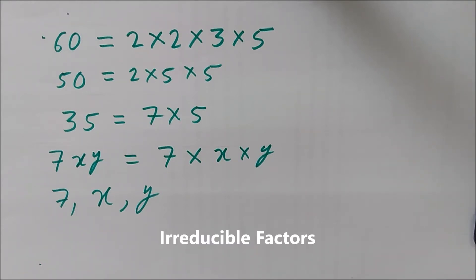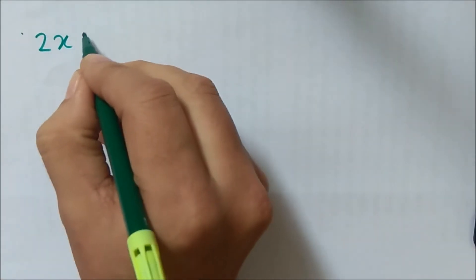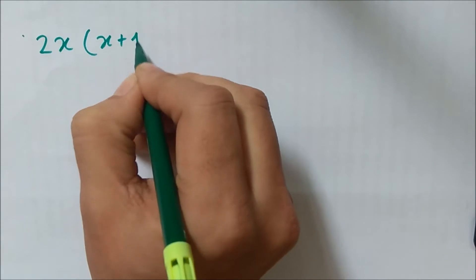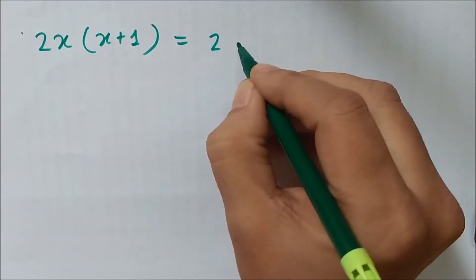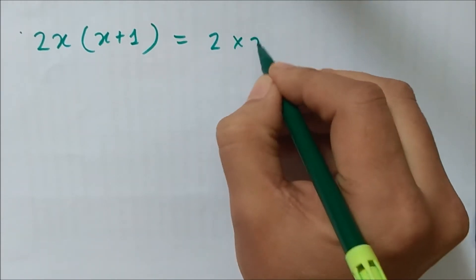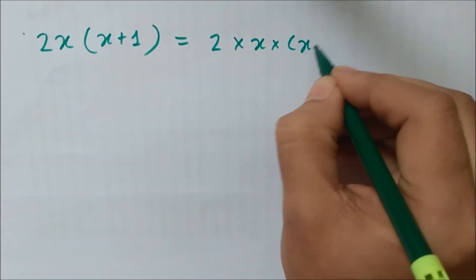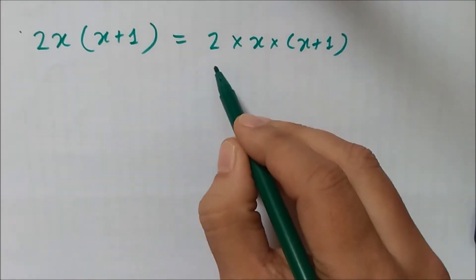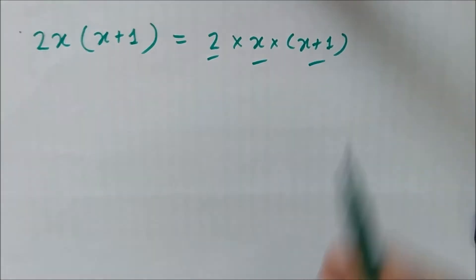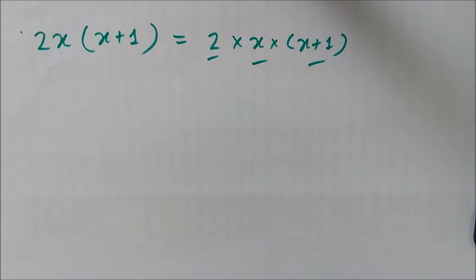But in algebra we call them irreducible instead of prime. Let us take another example of an algebraic expression, that is 2x into x plus 1. So this can be expressed as 2 into x into x plus 1. So here 2, x, and x plus 1 are all irreducible factors.